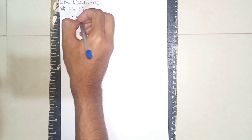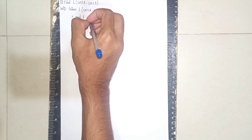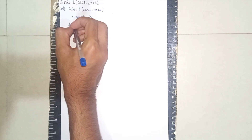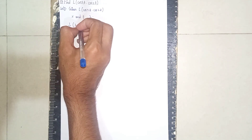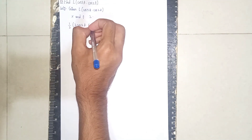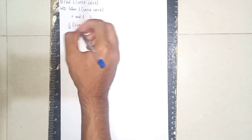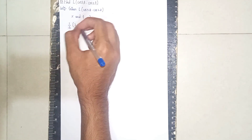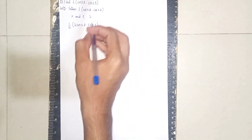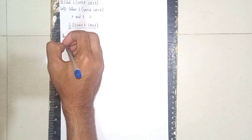Now what we will do here — I am using one technique: multiplying and dividing by 2. So it becomes one-half into two cos(7t) into cos(2t). I'm taking the 2 as common, multiplying it in.